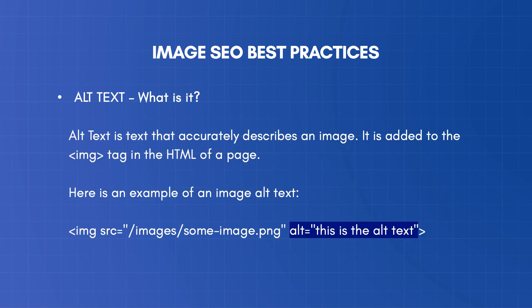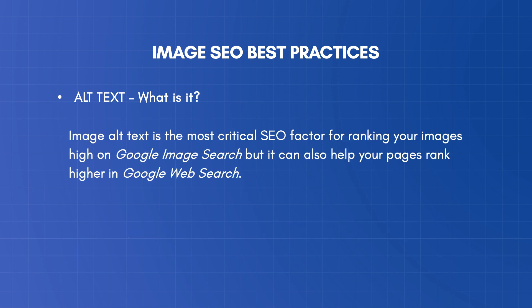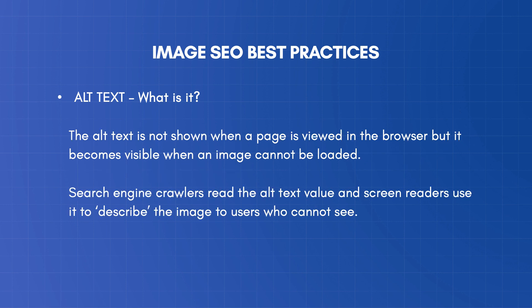Next, you should pay special attention to the image alt text. Alt text, also known as alternative text or alt attribute, is a text that accurately describes an image. It is added to the IMG tag in the HTML of a page. The alt text is the most important element to configure for SEO purposes, because it helps search engine crawlers understand the subject matter of the image. Alt text can help your images rank on Google image search, but it can also help your pages rank higher in Google web search. The alt text is not shown when a page is viewed in the browser, but it becomes visible when an image cannot be loaded. Search engine crawlers read the alt text value, and screen readers use it to describe the image to users who cannot see it.